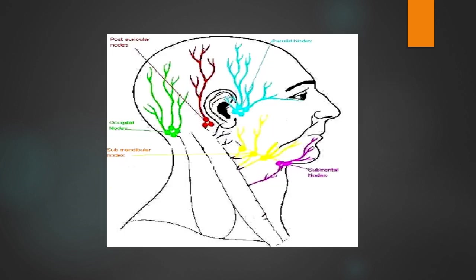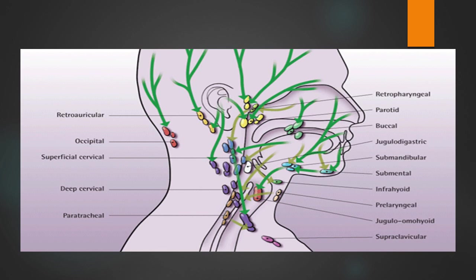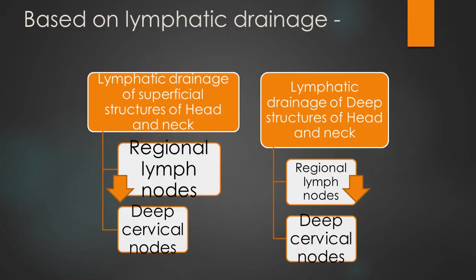The horizontal group includes the submental, submandibular, and parotid lymph nodes. The vertical group includes the jugulodigastric, infrahyoid, and pre-laryngeal lymph nodes. Another classification divides them into lymph nodes supplying the superficial head and neck region and lymph nodes of the deep cervical nodes.